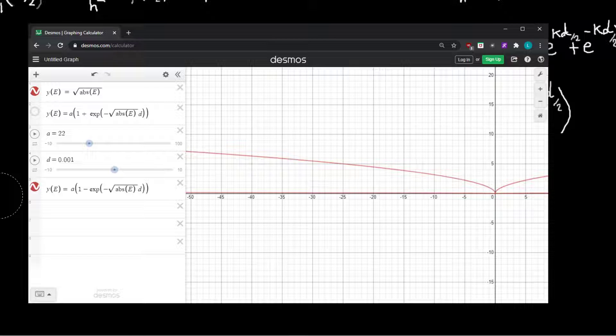And we would think that, well, if we have two delta wells, there should be two states if they're really far away from each other, because they're just two wells. So there should be one state in each well. And that logic makes sense.